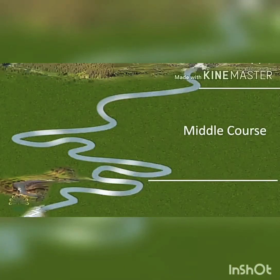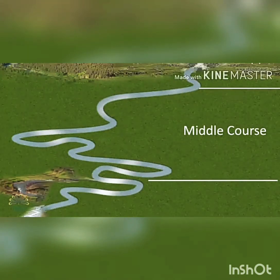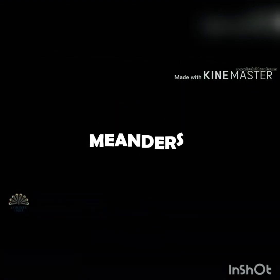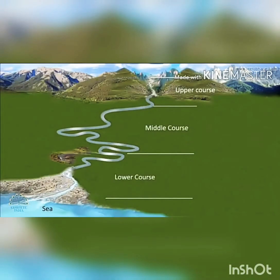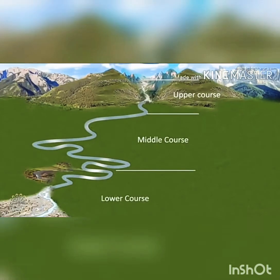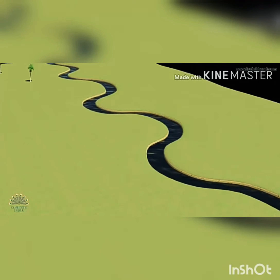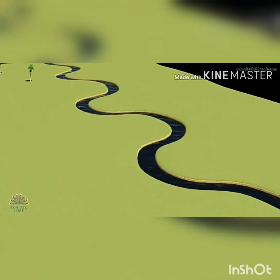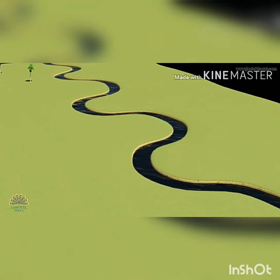Now we are going to see the middle course of the river. As the river enters the plain it twists and turns, forming large bends known as meanders. The term meander has been named on the basis of the Meander River of Asia Minor, present in Turkey, which flows through numerous curves and turns. An example of a meander in Tamil Nadu is the river Vellar in Cuddalore district.